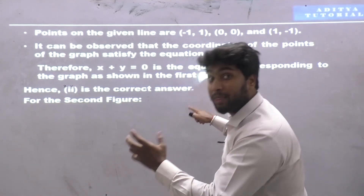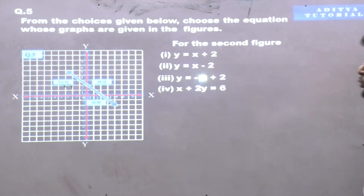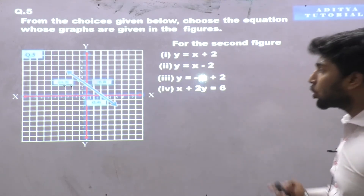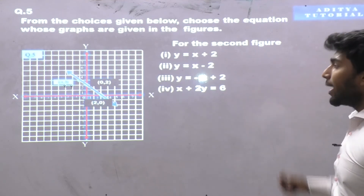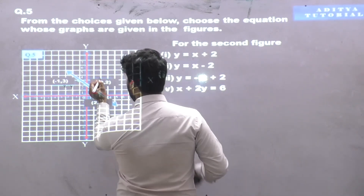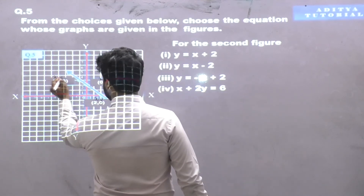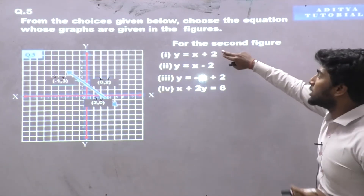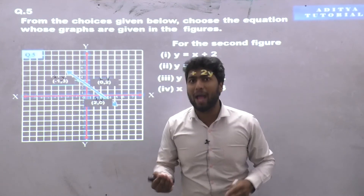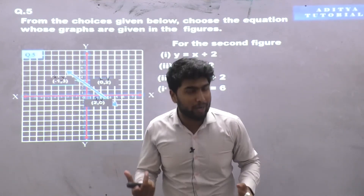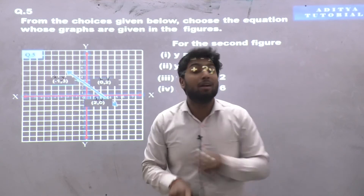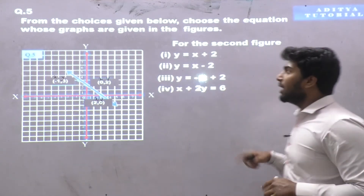Now we will follow the same method for the second figure. The given coordinates are (0,2), (2,0), and (-1,3). We need to assume any one equation, substitute the x and y values, and check whether left-hand side is equal to right-hand side. If it is equal, that equation satisfies this graph; if not, it doesn't.